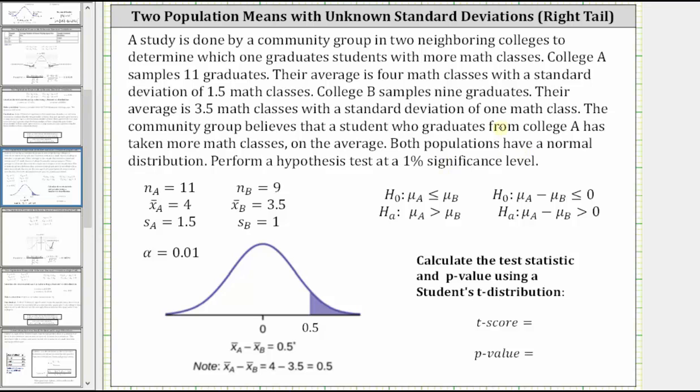Let's begin by listing all the given information. For college A, we will use subscript A. For college B, we will use subscript B. College A samples 11 graduates. N sub A is equal to 11. The average is four math classes with a standard deviation of 1.5 math classes. And therefore, X bar sub A is equal to 4. S sub A is equal to 1.5.